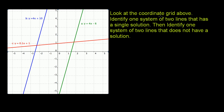We're told to look at the coordinate grid above — I put it on the side here. Identify one system of two lines that has a single solution, then identify one system of two lines that does not have a solution. So let's do the first part first.